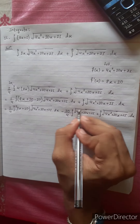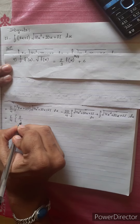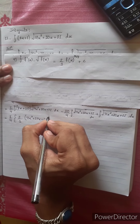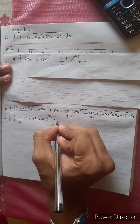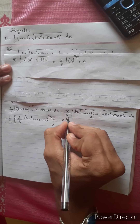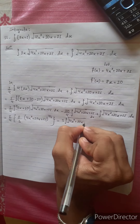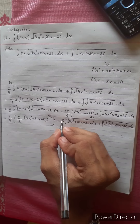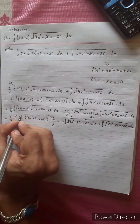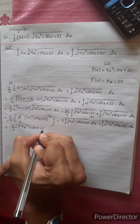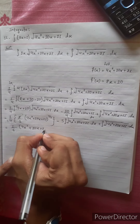Applying the formula: f'(x) multiplied by under root f(x) gives (2/3) f(x)^(3/2). So we get f(x) = 4x squared plus 20x plus 21, raised to the power 3/2. Then minus 5 by 20, and the integration of the same 4x squared plus 20x plus 21 dx, giving 1/6 times 4x squared plus 20x plus 21 to the power 3/2, minus 4 times the remaining integration.